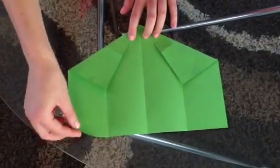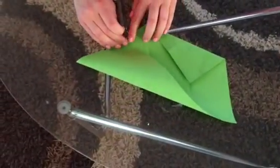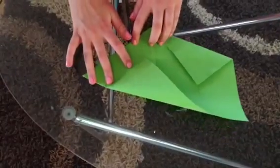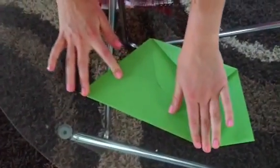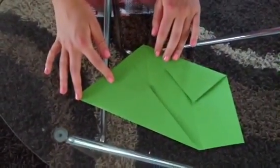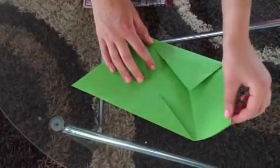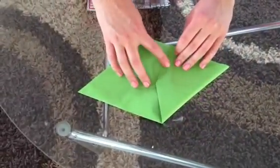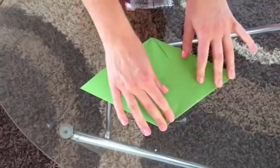You then need to take one of your bottom corners and fold it up to meet the other side. So this will be a bigger flap just like that. And finally you need to take your other corner and fold it up to meet the other side.